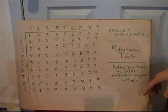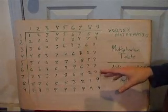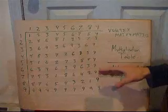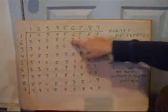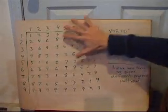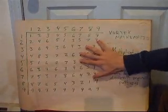Multiplication table. Another thing about the multiplication table shows you the significance between the differences between the 1 through 9 numbers. This is the multiplication table broken down into quantum numbers.